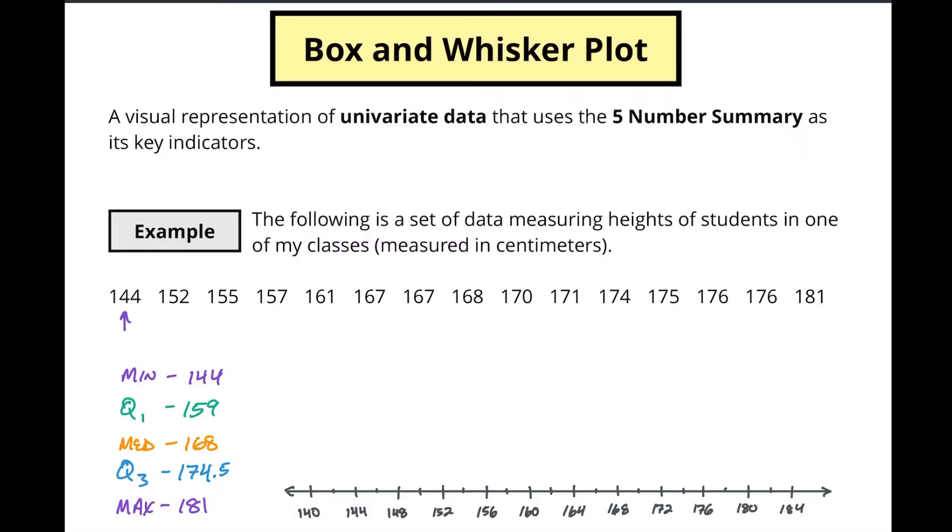So we have our minimum, we have our quartile 1 which falls in between these two values, we have our median which is also called our quartile 2, we've got our quartile 3, and then finally we have our maximum value.